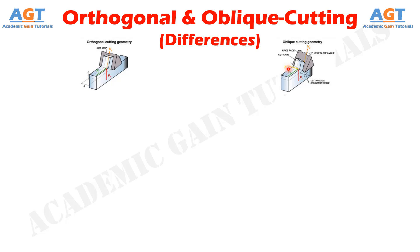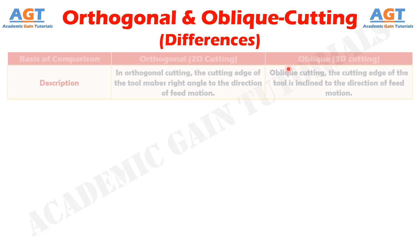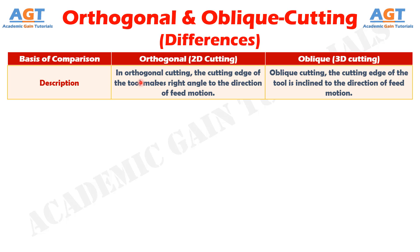If we differentiate orthogonal cutting from oblique cutting in terms of how we describe them: in orthogonal cutting, the cutting edge of the tool makes a right angle to the direction of feed motion. Whereas in oblique cutting, the cutting edge of the tool is inclined to the direction of feed motion.